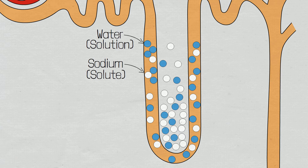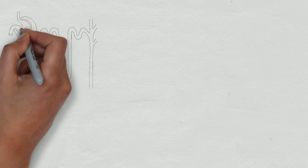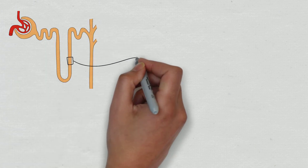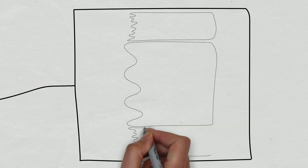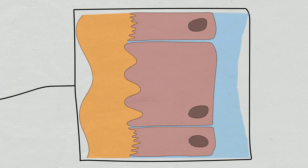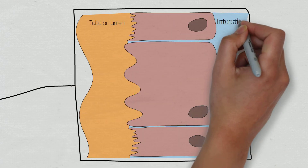The ascending limb of the loop of Henle is responsible for further reabsorption of solutes such as sodium, potassium and chloride, but it is impermeable to water. It is the reabsorption of solutes in this area that controls the osmolality or saltiness of the kidney medulla. To understand how feruzamide works, we are going to zoom in on a cell within the ascending limb of the loop of Henle. The ascending limb is responsible for the reabsorption of solutes from the tubule and into the interstitial space of the kidney medulla.